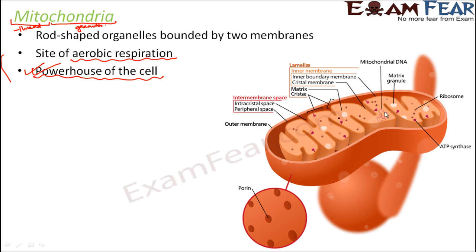If you look at where mitochondria are located, this entire structure is mitochondria. Generally they are uniformly distributed throughout the cytoplasm — it is not that they are concentrated at some place; they are uniformly distributed throughout.